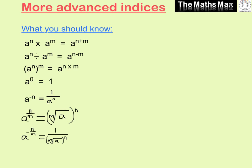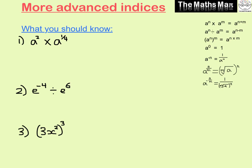For the first one, we're multiplying indices, so all we do is add our indices. This gives us a to the power of 2 plus a quarter. So 2 plus a quarter is 2 and a quarter, and writing that as an improper fraction: 2 times 4 is 8, plus 1 is 9, so the answer is a to the power of 9 over 4.